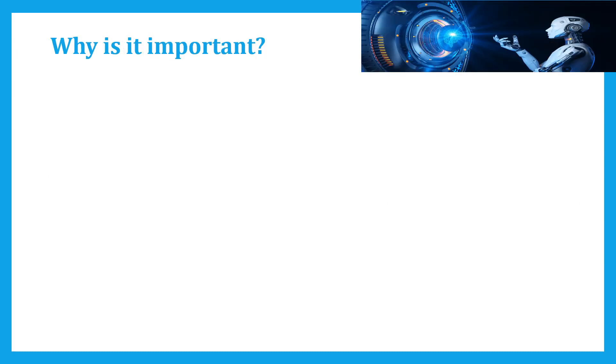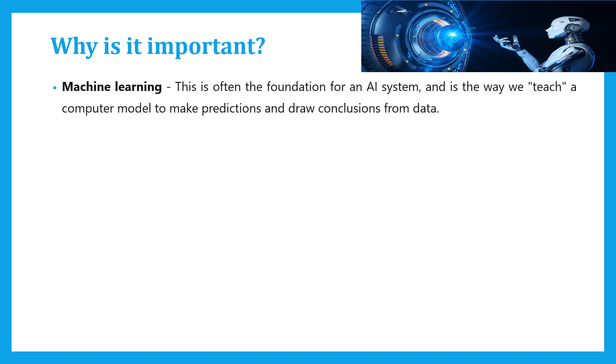Why is it important? First is machine learning. Machine learning is a branch of artificial intelligence and computer science which focuses on the use of data and algorithms to imitate the way humans learn and gradually improve its accuracy.